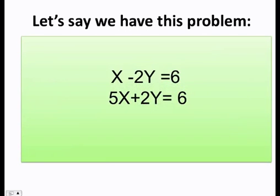Let's say that we have this problem. x minus 2y equals 6. 5x plus 2y equals 6. You can easily do this problem by hand, but today we're just going to teach you how to do it with the calculator. Let's start.